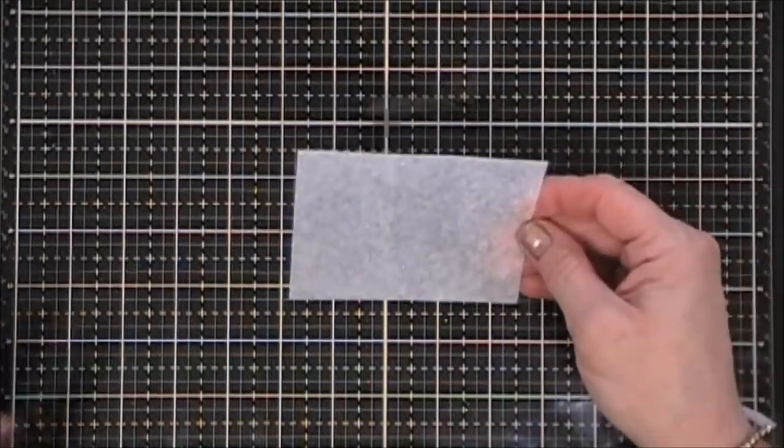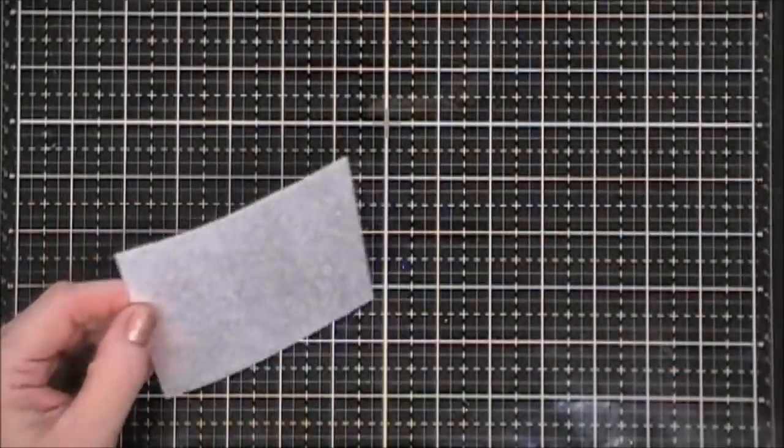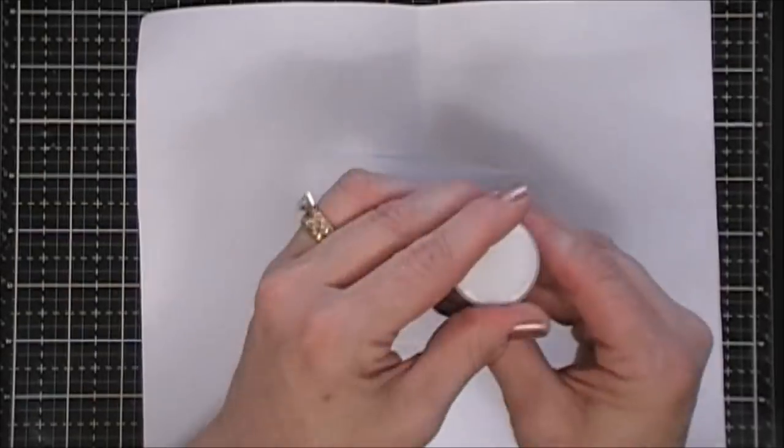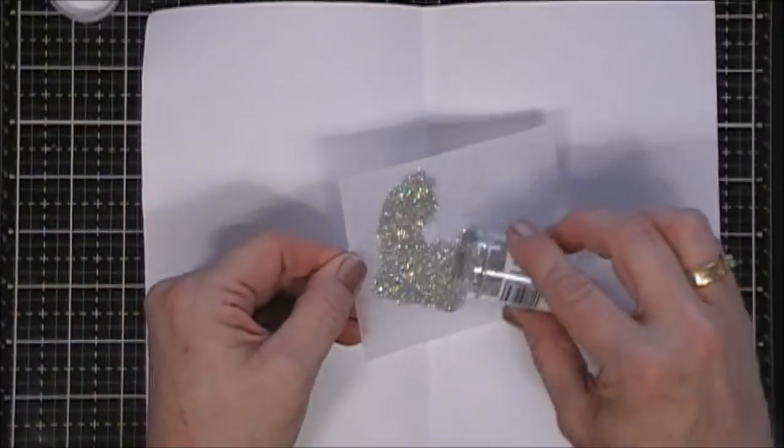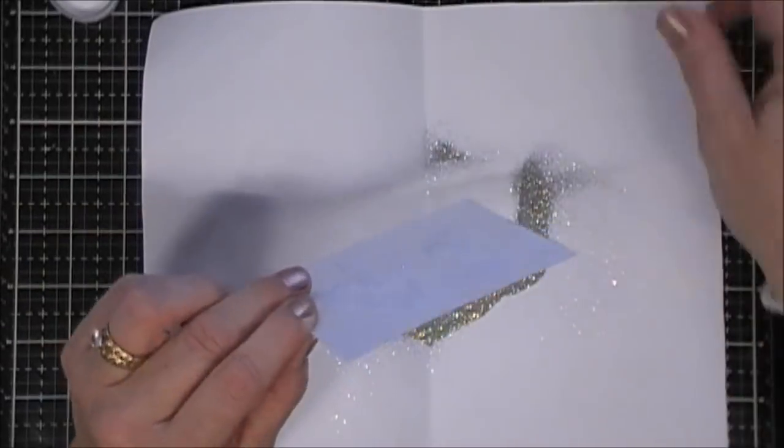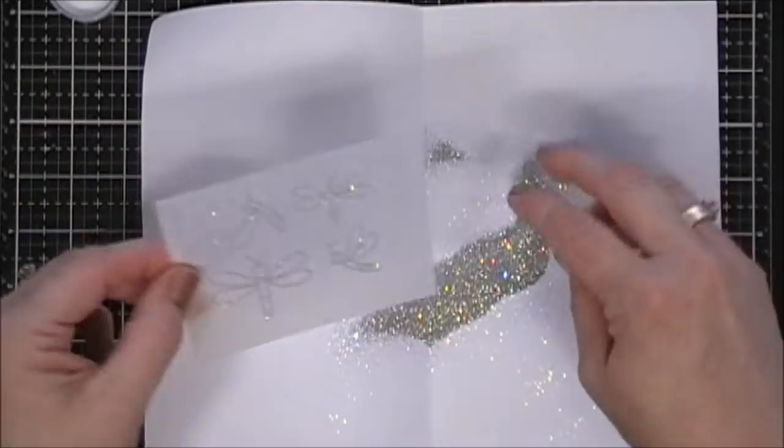If you do not do that, you have an embossing mess. So I'm going to ink up my dragonflies with my VersaMark ink and I'm going to stamp them. And I'm actually going to do this step twice. I'm going to cut out two of these.